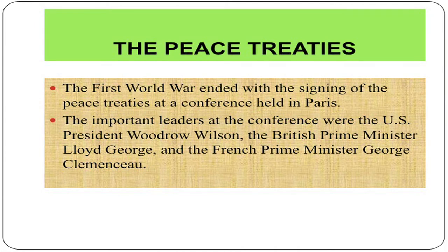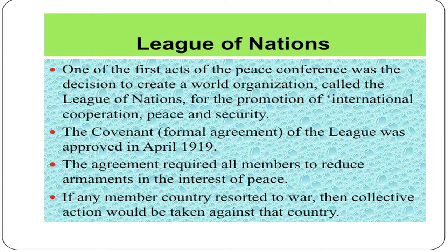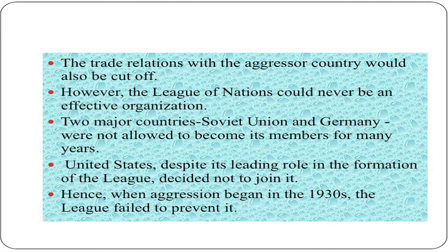The First World War ended with the signing of the peace treaties at a conference held in Paris. The important leaders at the conference were the United States President Woodrow Wilson, the British Prime Minister Lloyd George and the French Prime Minister Georges Clemenceau. One of the first acts of the peace conference was the decision to create a world organization called the League of Nations for the promotion of international cooperation, peace and security. The Covenant — the formal agreement of the League — was approved in April 1919. The agreement required all members to reduce armaments in the interest of peace. If any member country resorted to war, collective action would be taken against that country, and trade relations with the aggressor country would also be cut off. However, the League of Nations could never be an effective organization.